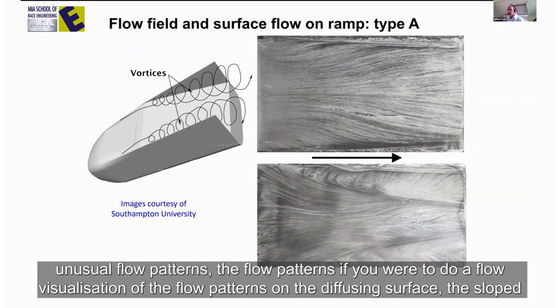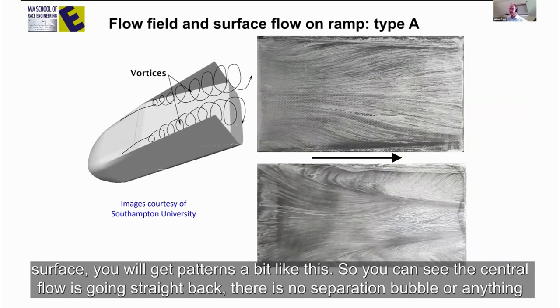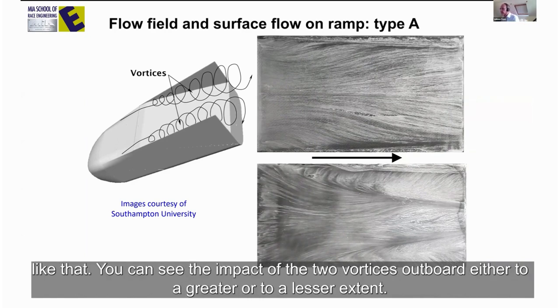If you were to do a flow visualization of the flow patterns on the diffusing surface, the sloped surface, you would get patterns a bit like this. You can see the central flow is going straight back. There is no separation bubble or anything like that, and you can see the impact of the two vortices outboard, either to a greater or to a lesser extent.